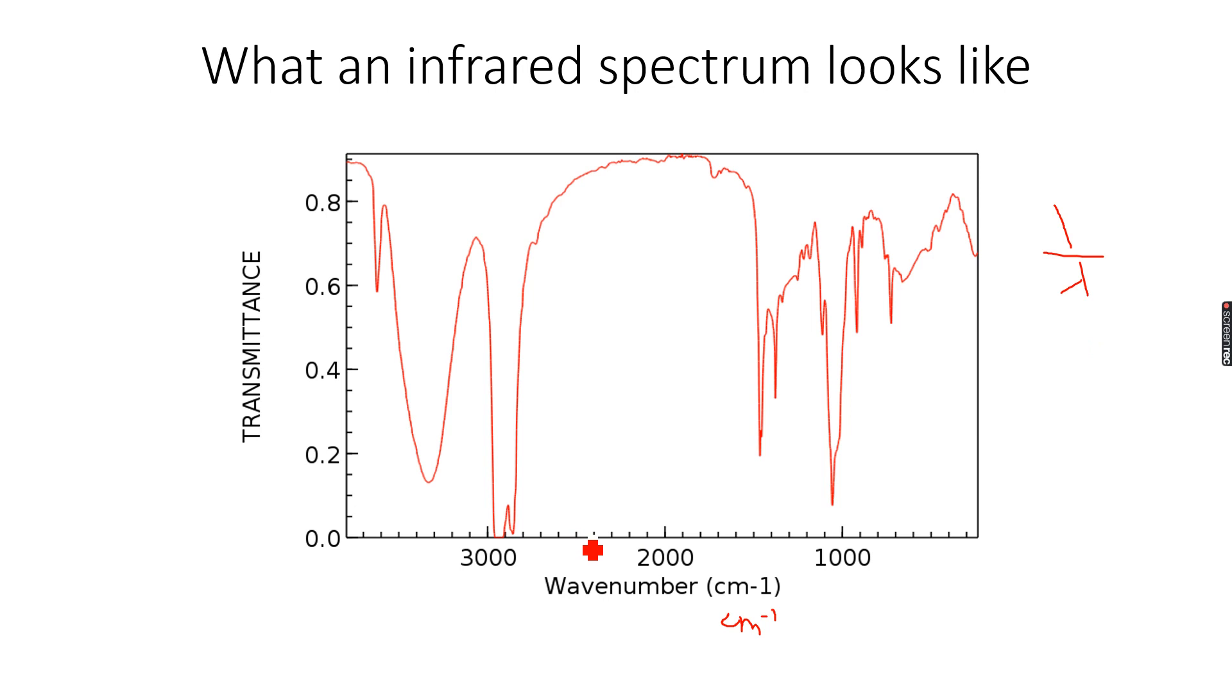This axis shows the wave numbers, which represents decreasing wavelength as we go towards the left. Because as the wavelength decreases the wave number increases, you can see increasing wave number but decreasing wavelength. This wavelength is the wavelength that is absorbed by the compound.